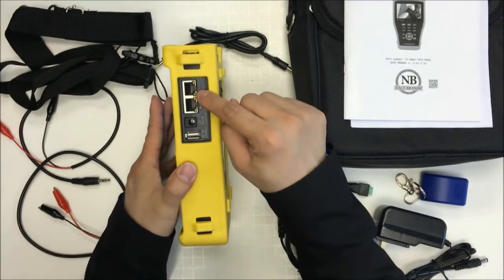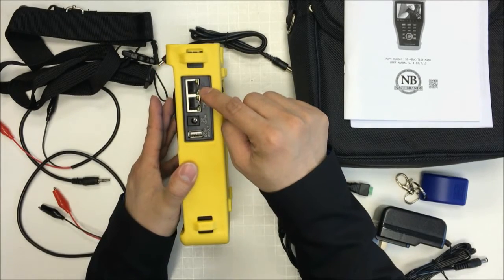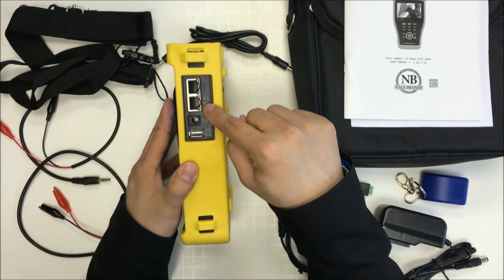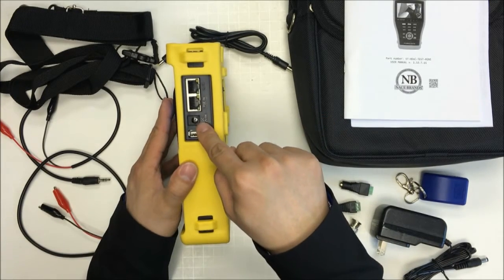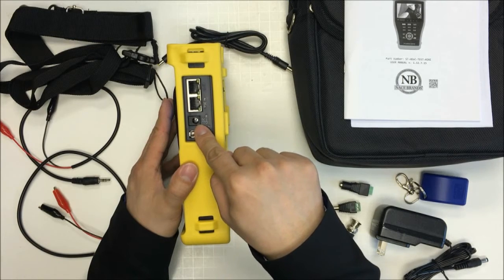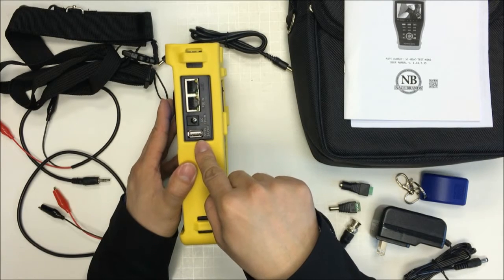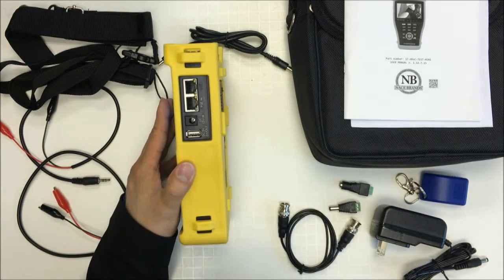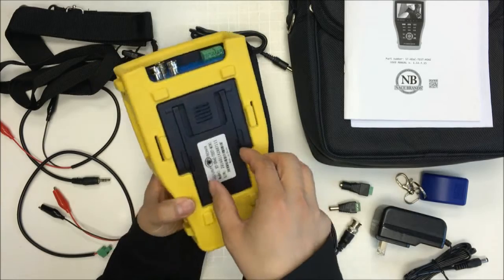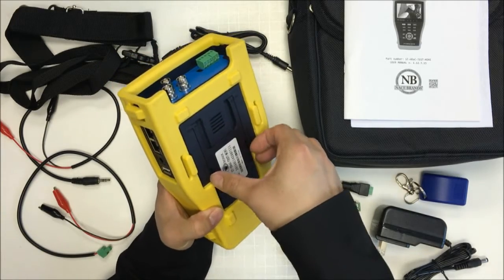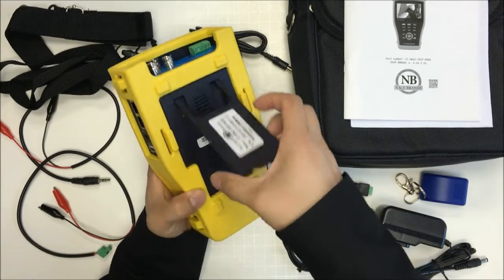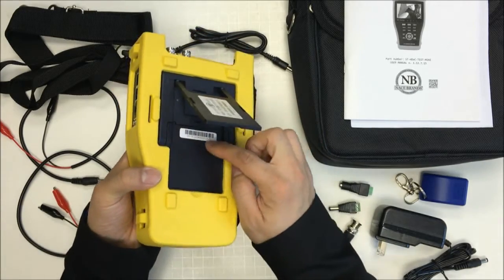On this side is a LAN port which can connect to the IP camera. This is a PSE input port. This is a DC 12 volt input. This is a DC 5 volt 2 amp power output from the USB. On the back it has a stand and also rechargeable battery.